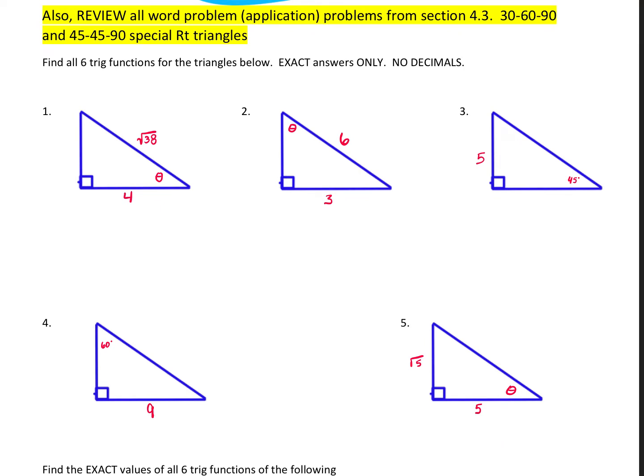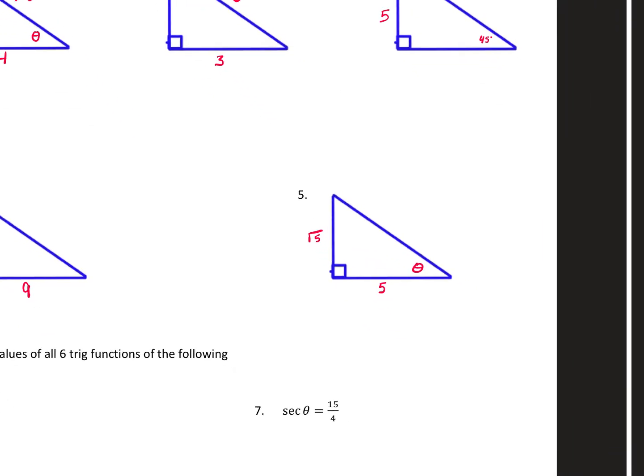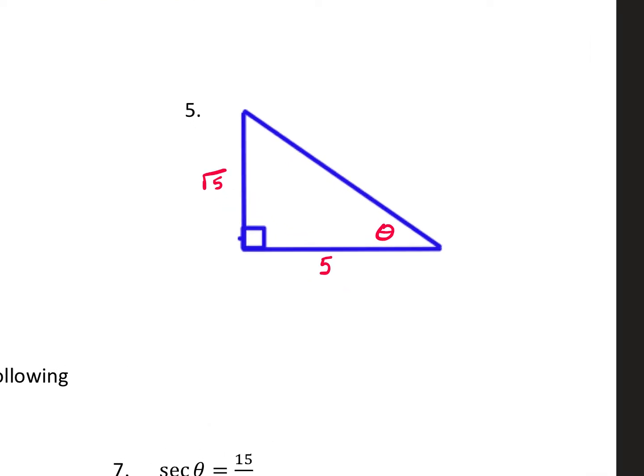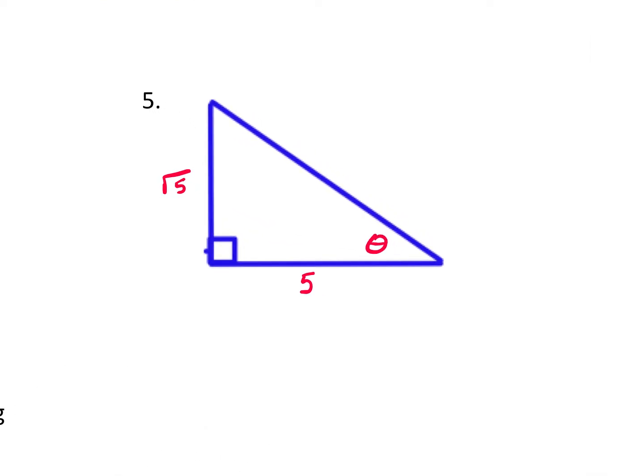I'm going to do just a few from the first part, but if you have questions on one that I skip, I'll go back to it. I want to do number 5. We have to find all six trig functions for our triangle here, for theta. I need to also know what all three sides of my triangle are. How can I find the missing side?